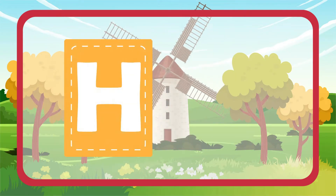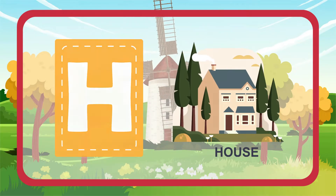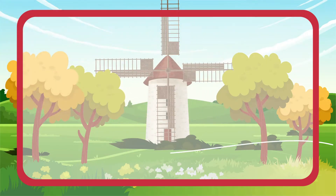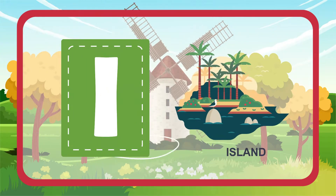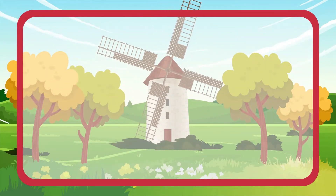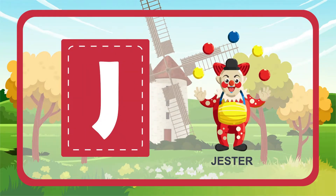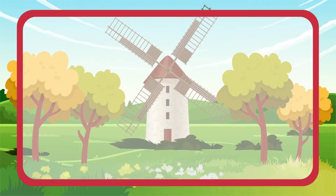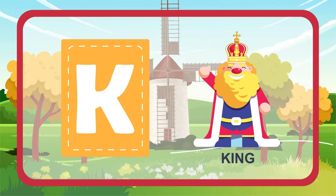H is for House. I is for Island. J is for Jester. K is for King.